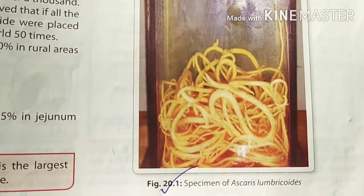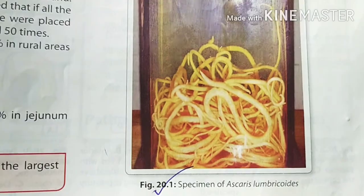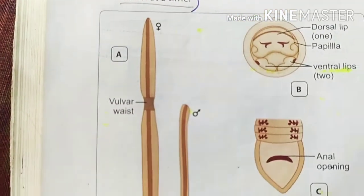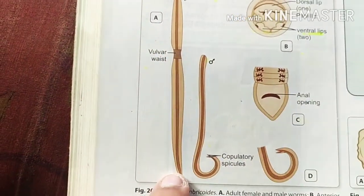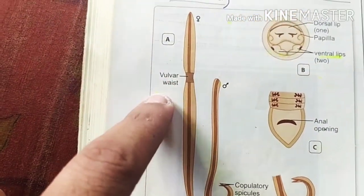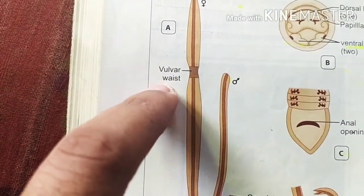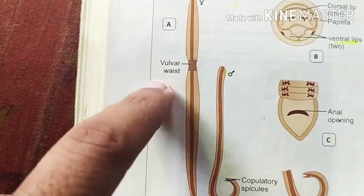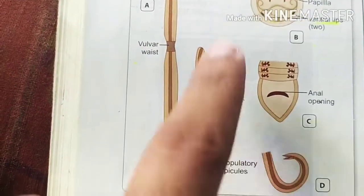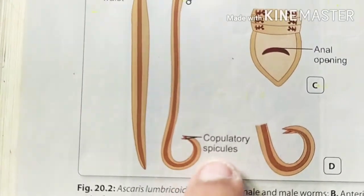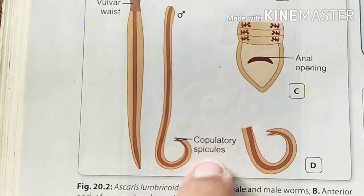You can see the picture of Ascaris lumbricoides. Now let us look at the morphology. This long worm is the female one, which has a vulval waist — the vulva acts like a vagina. And this is the male worm, which has copulatory spicules that act like a penis.